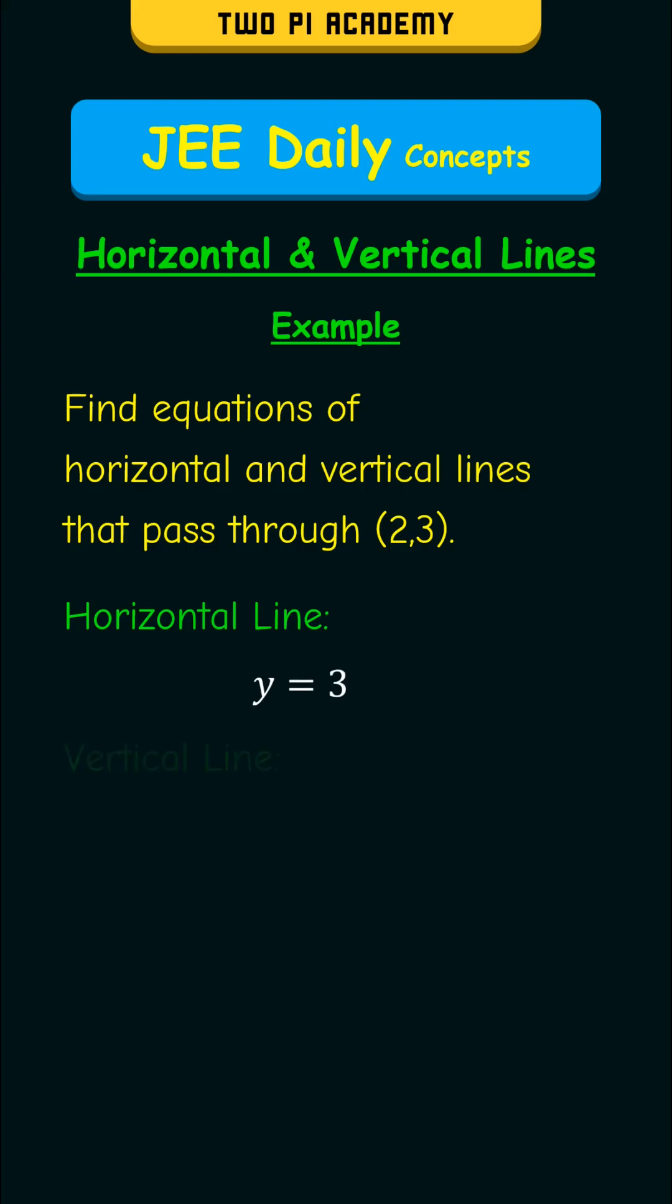And the vertical line will be of the form x equals a, where in this case, a equals 2. So therefore, we get x equals 2.